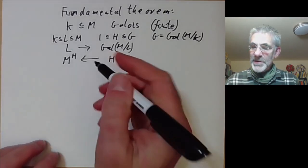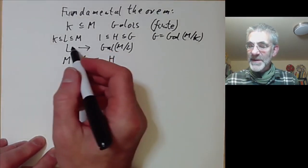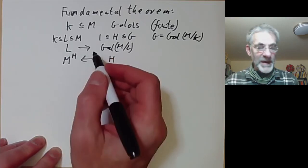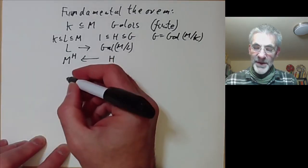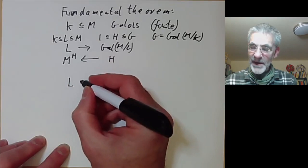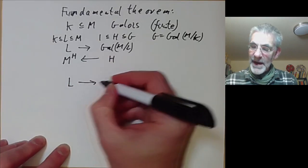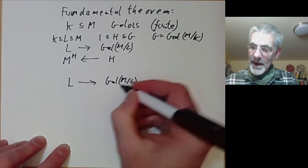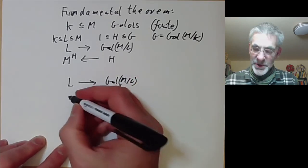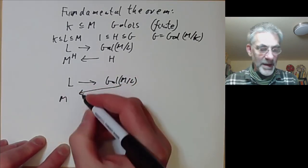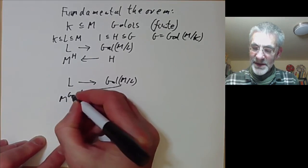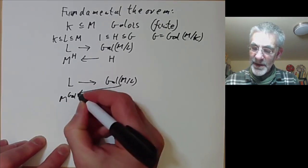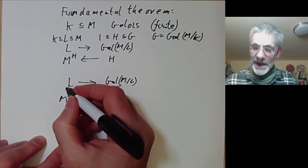What we want to do: the fundamental theorem says that these maps are inverses of each other. In other words, if we take a field L and we go to the corresponding group, and then we go back to the fixed field — so we take the fixed field of M of Gal(M over L) — this should be equal to L.